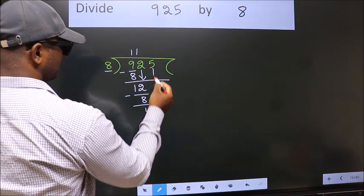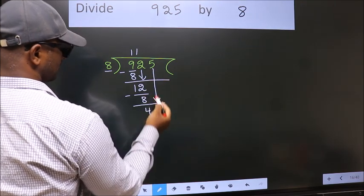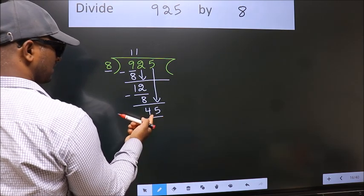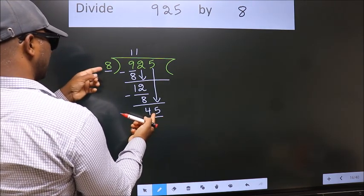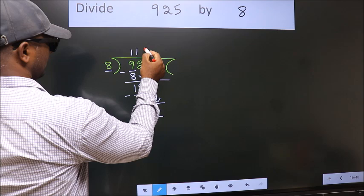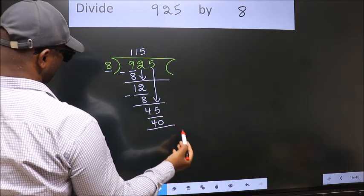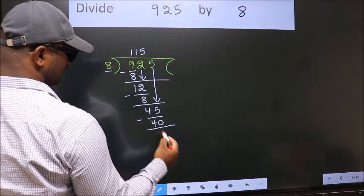After this, bring down the beside number. So 5 down. So 45. A number close to 45 in 8 table is 8 fives 40. Now we subtract. We get 5.